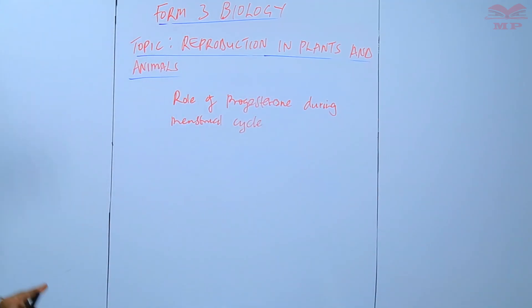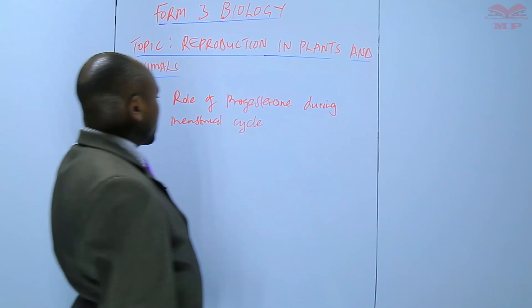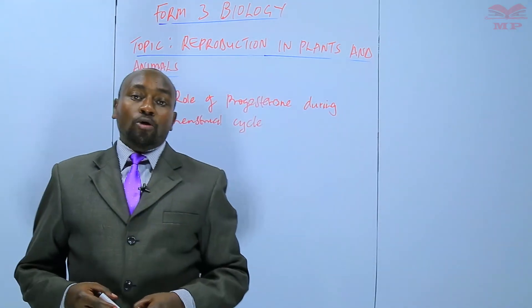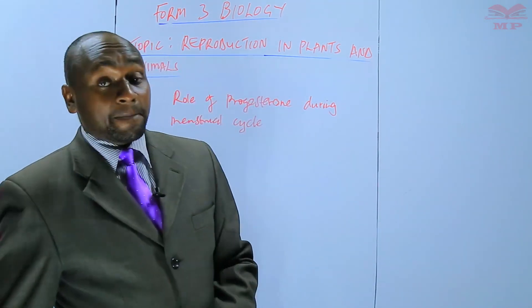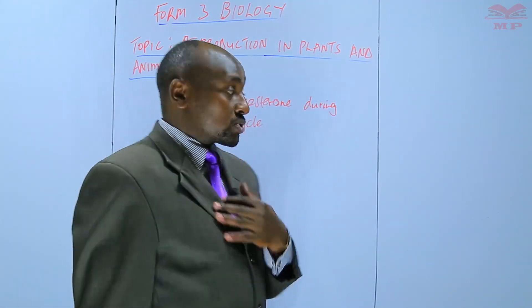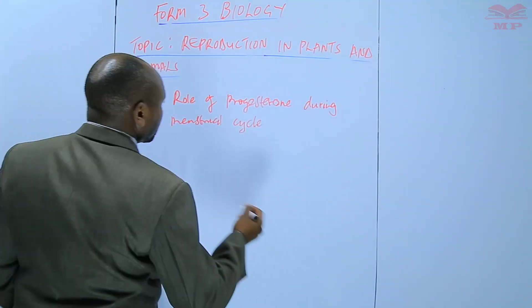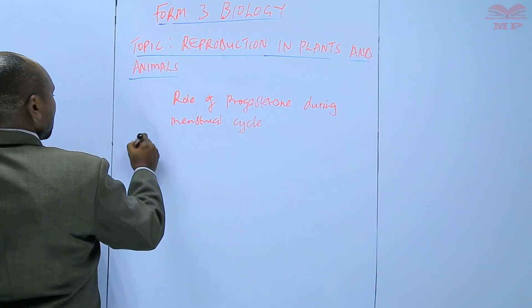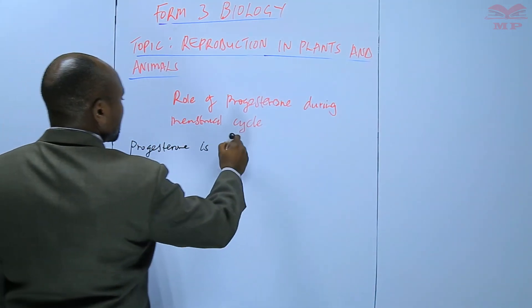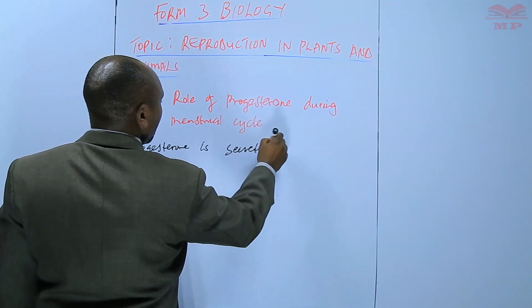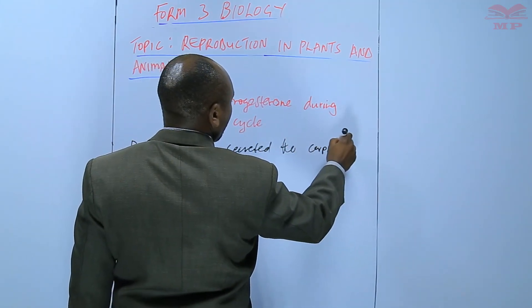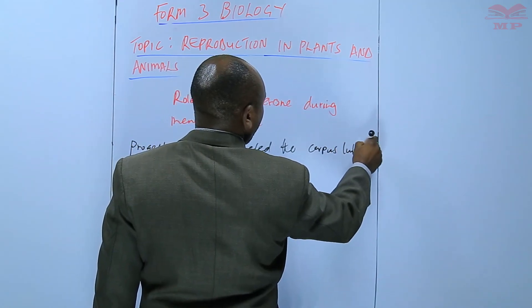We should not confuse the role of progesterone during pregnancy — where it is the hormone that maintains the pregnancy — with its role in the menstrual cycle. At this point we want to discuss its role in the menstrual cycle. Progesterone is secreted by the corpus luteum.